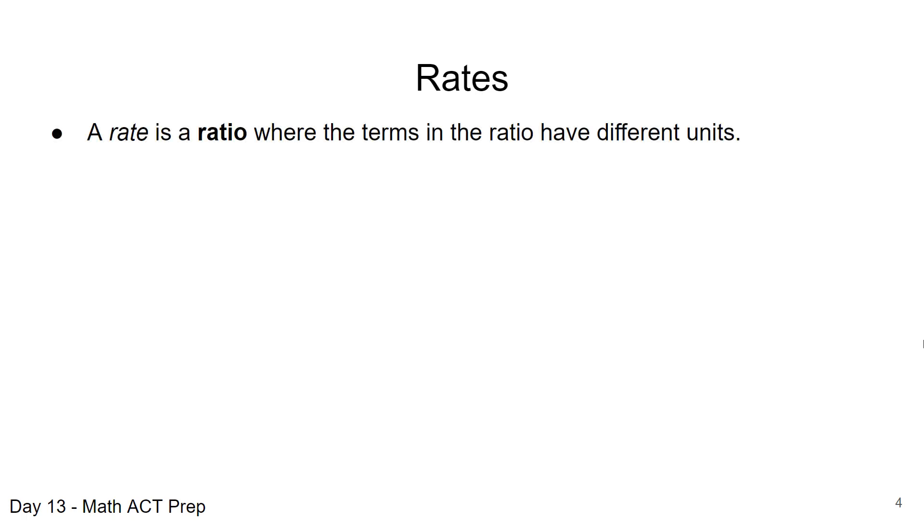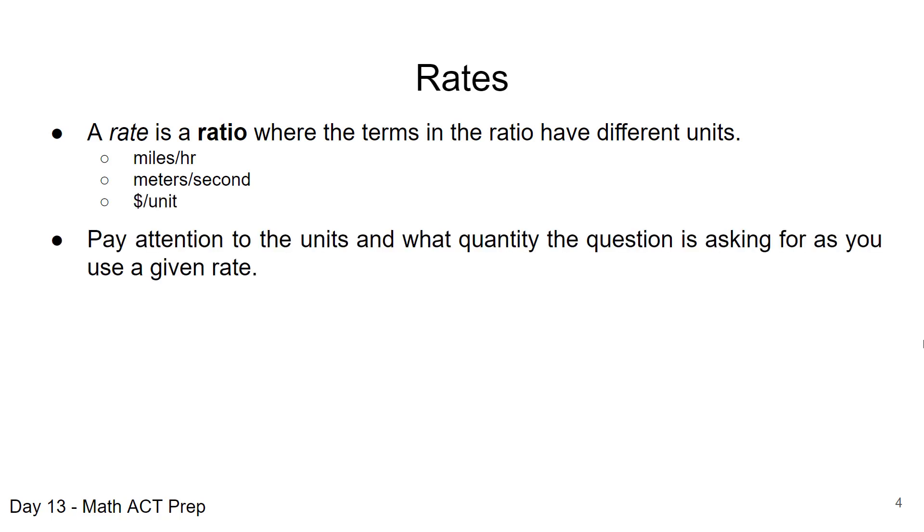When we're talking about rate, we're looking at a ratio where the terms in the ratio have different units. Examples of that might be miles per hour, meters per second, or dollars per unit. Pay attention to the units and what quantity the question is asking for when they give us a given rate, because that's going to be important.